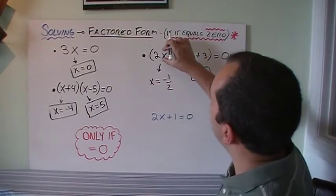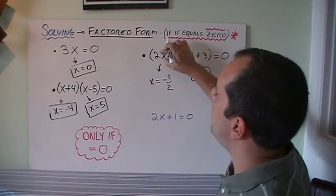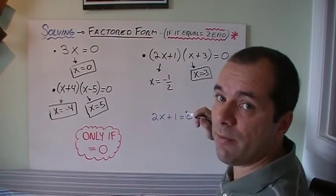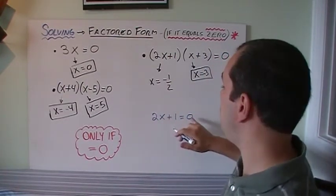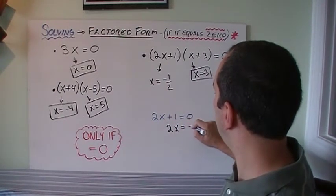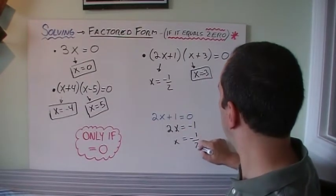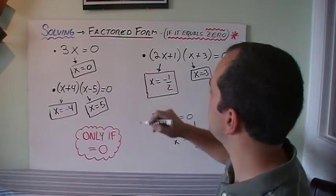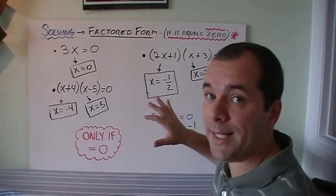Now if that doesn't make any sense to me, I'm just going to isolate it. I'm going to go 2x plus 1 equals 0, so then 2x equals minus 1. Now I bring the 2 over, and we end up with the same answer. So that's when it's already in factored form and it equals 0.